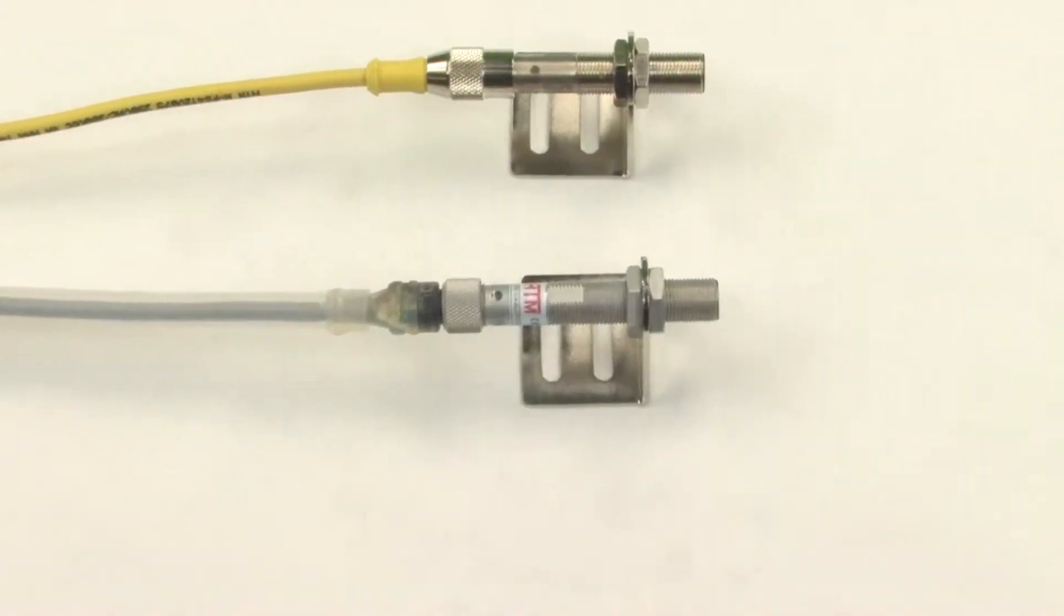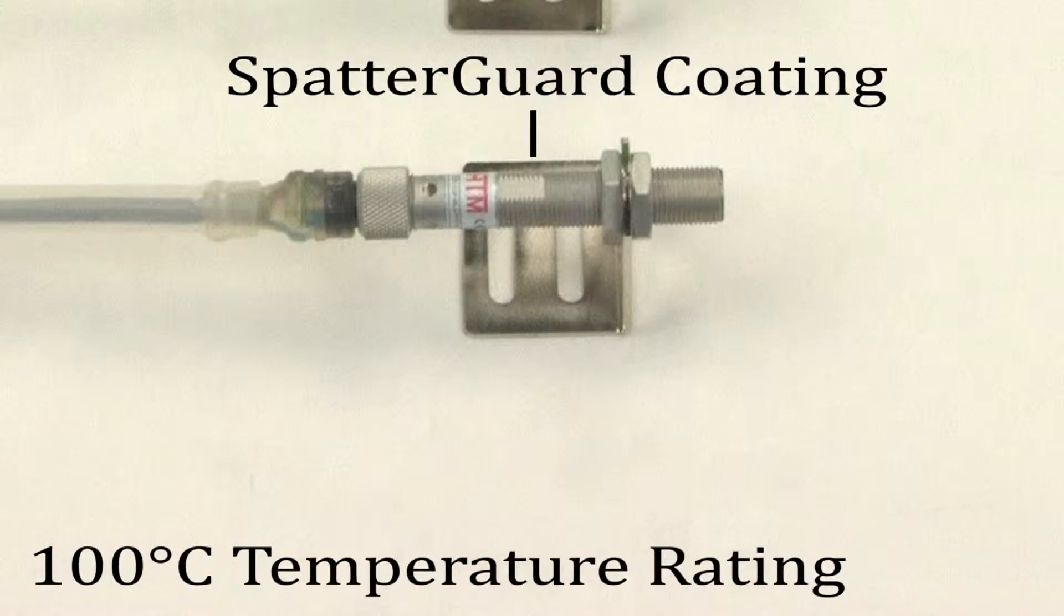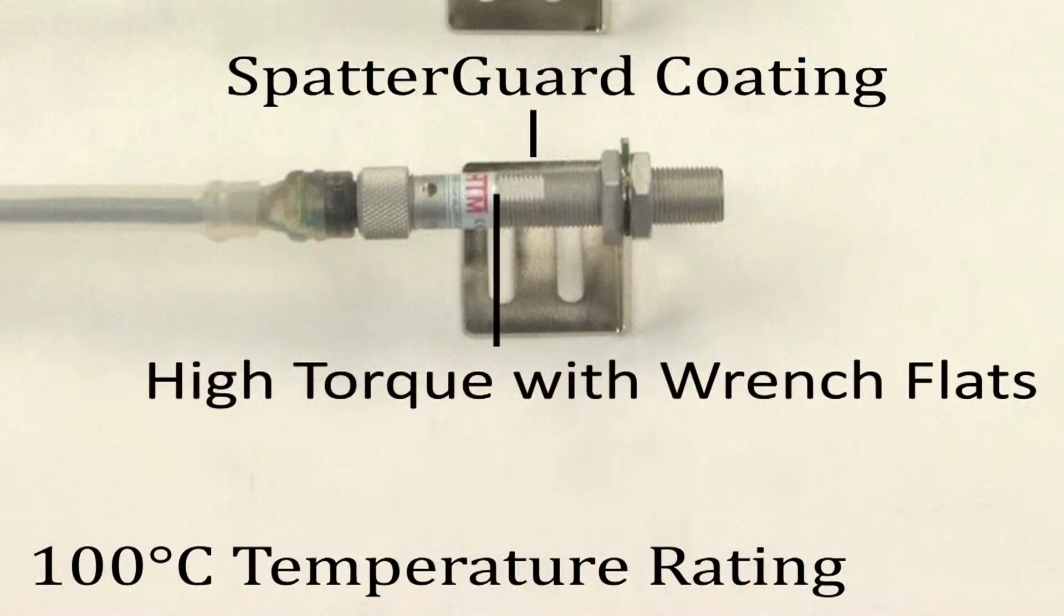HTM's general purpose automotive proximity sensors are manufactured with a spatter guard coating to prevent weld slag from building up, a high temperature rating to withstand heat, and a durable high torque barrel that prevents abrasion and impact damage.